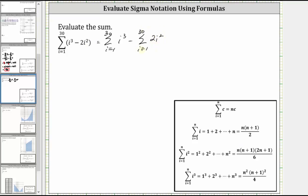And let's also factor out the two from the second sum and write the given sum as the sum from i equals one to 30 of i cubed minus two times the sum from i equals one to 30 of i squared.